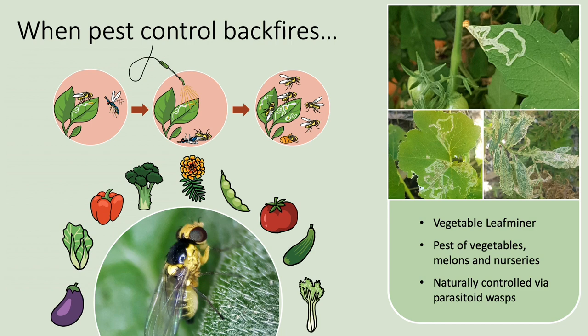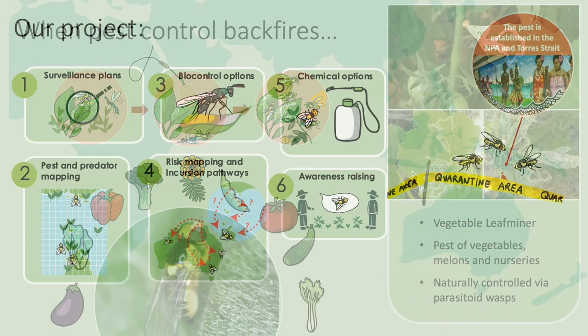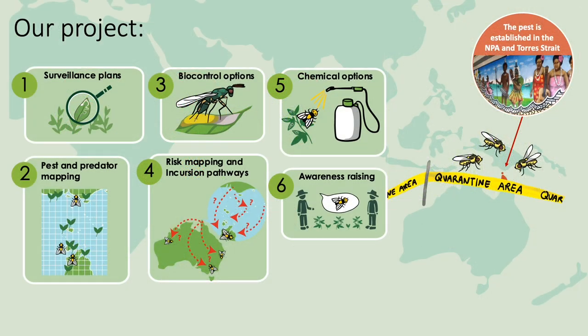Ultimately, losses overseas have been ubiquitously associated with chemical mismanagement leading to the destruction of the parasitoid wasps. In 2015, the vegetable leaf miner reached the northern tip of Australia after moving down through the Torres Strait. It's been restricted to the town of Saisha in the northern peninsula area since then, giving us valuable time to prepare.